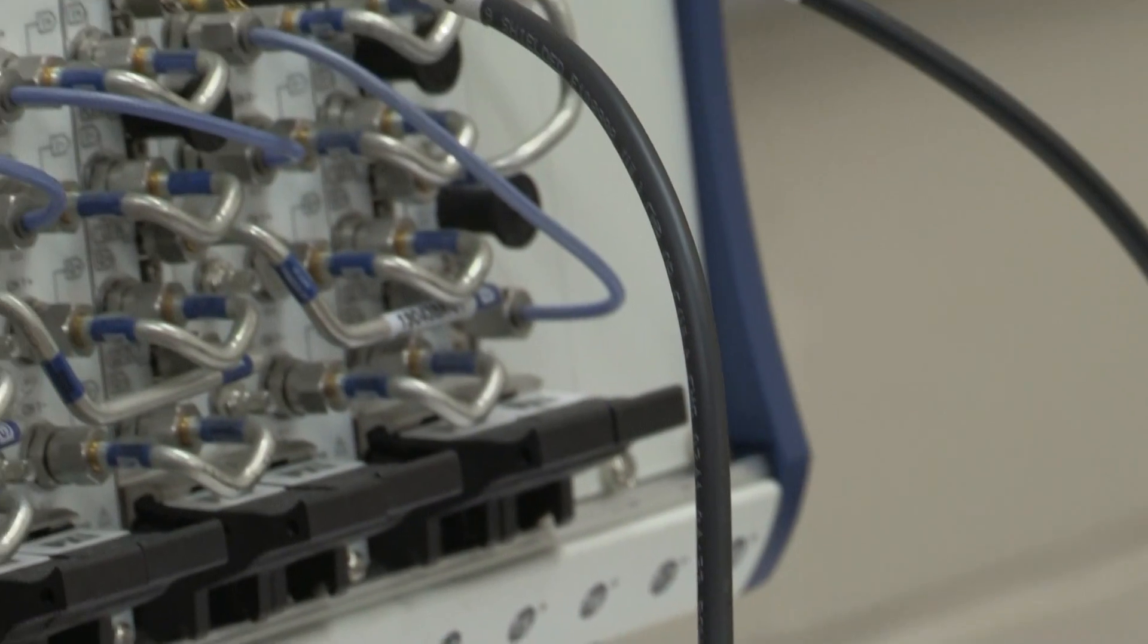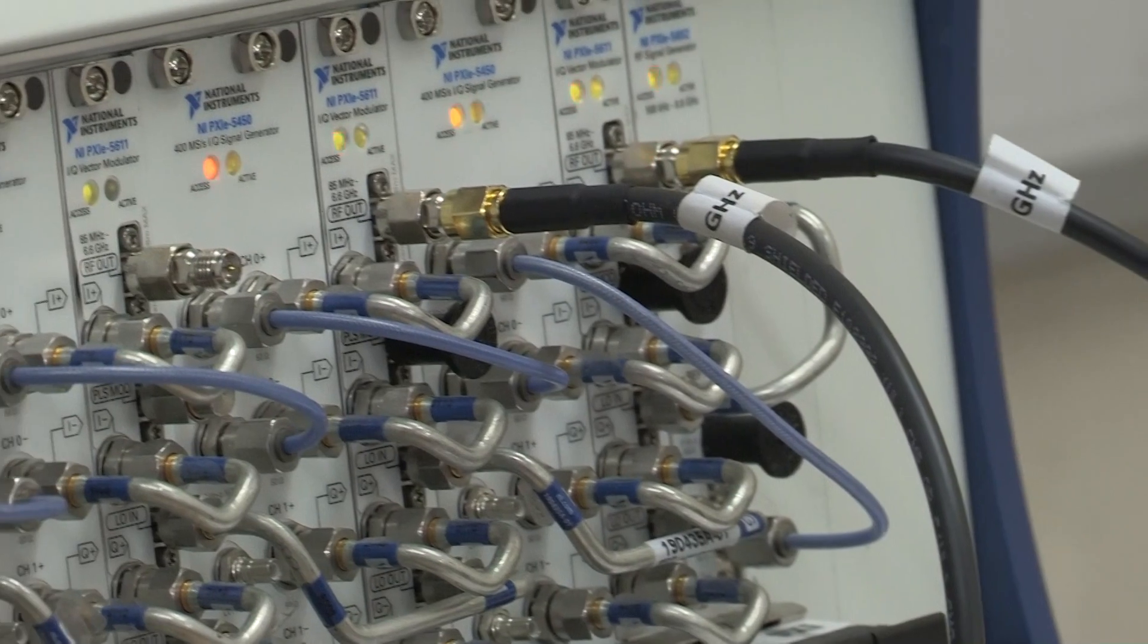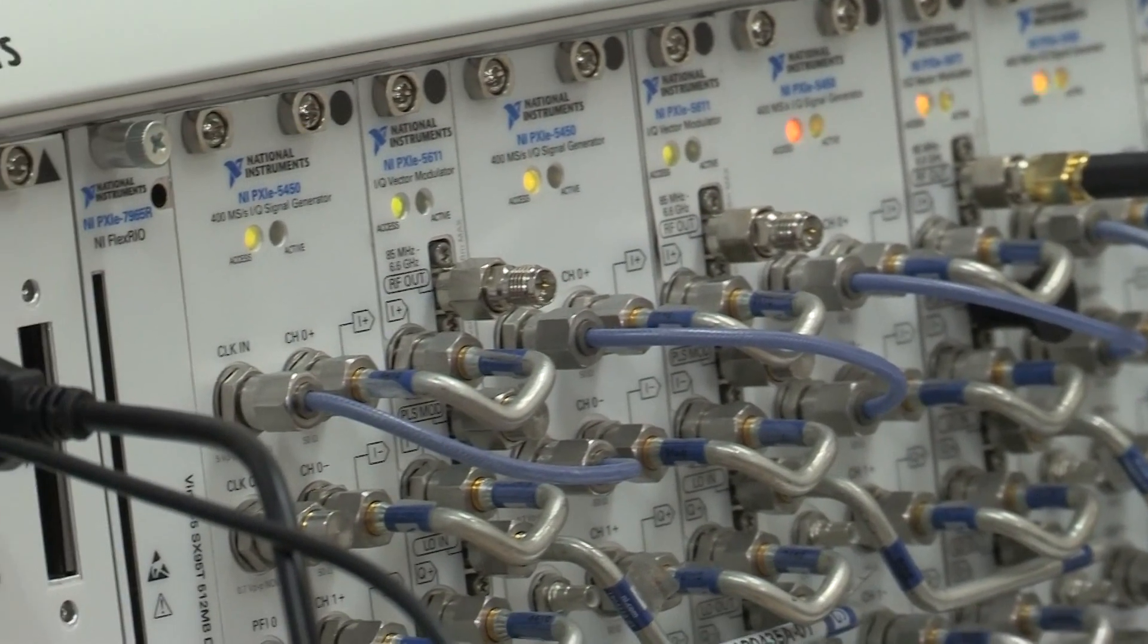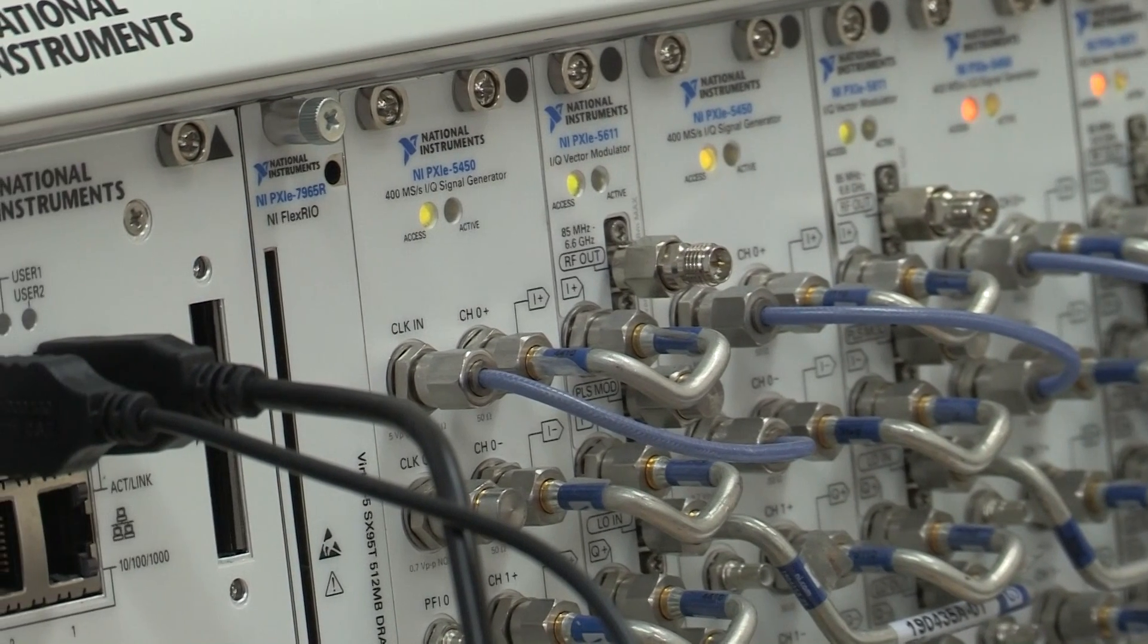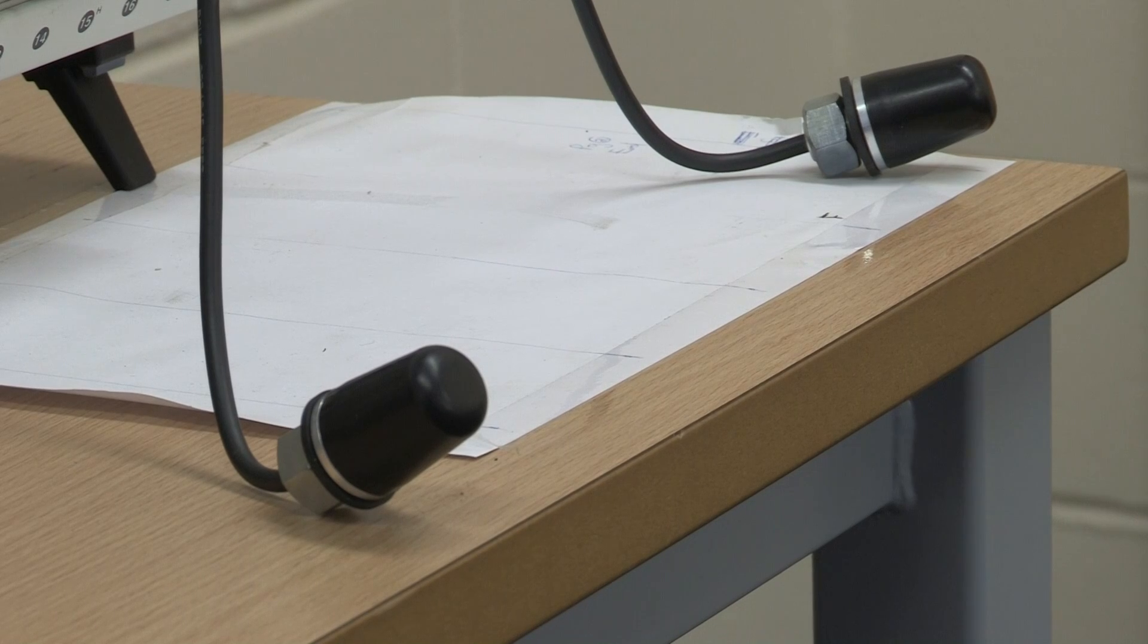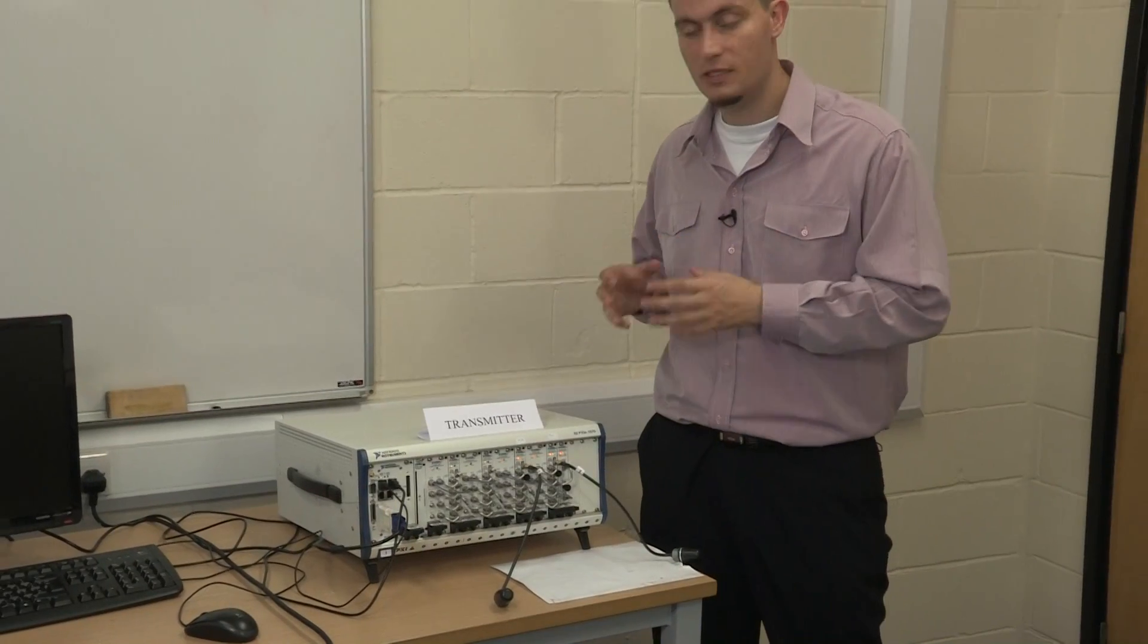This is the transmitter for the practical implementation of spatial modulation. It uses two transmit antennas and broadcasts at a frequency of 2.3 gigahertz with a sampling rate of 5 mega samples per second. By using one additional transmit antenna, the data rate of the system is effectively doubled since BPSK modulation is used.